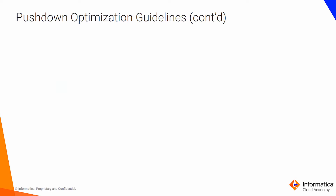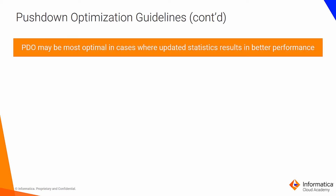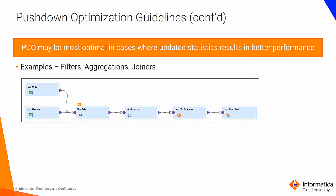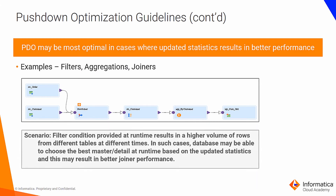PDO may also be most optimal in cases where updated statistics result in better performance. For example, if a filter condition provided at runtime results in higher volumes of rows from different tables at different times, the database may be able to choose the best master-detail combination at runtime based on updated statistics, which may result in better joiner performance.